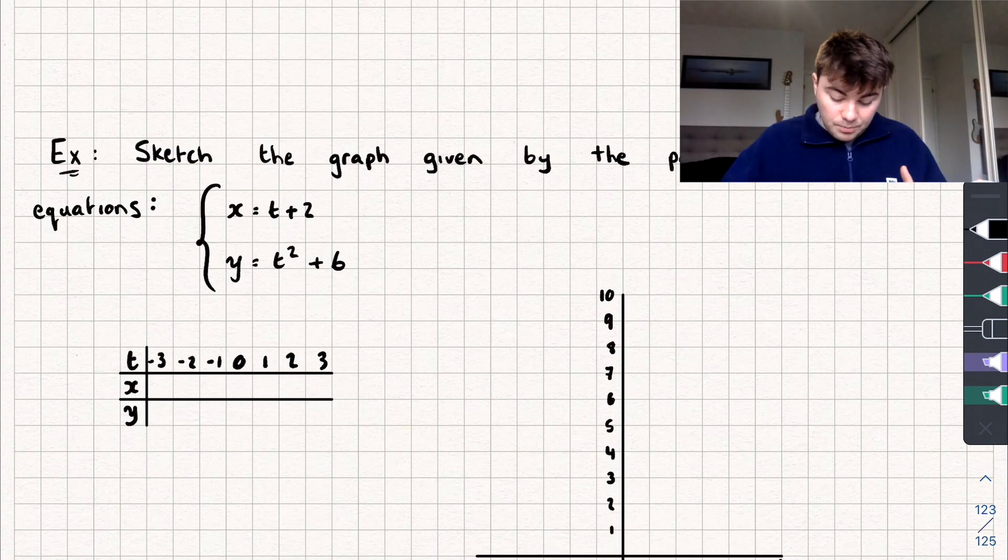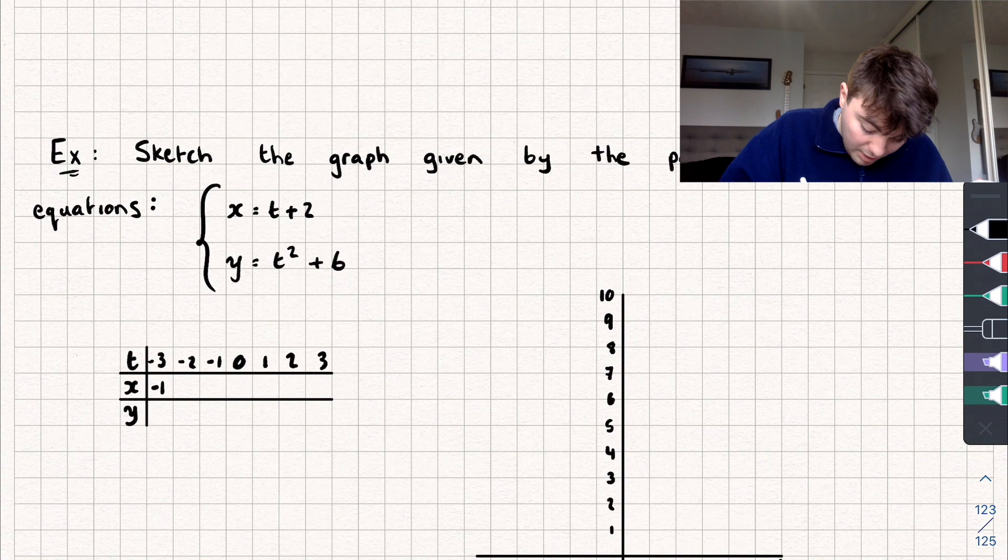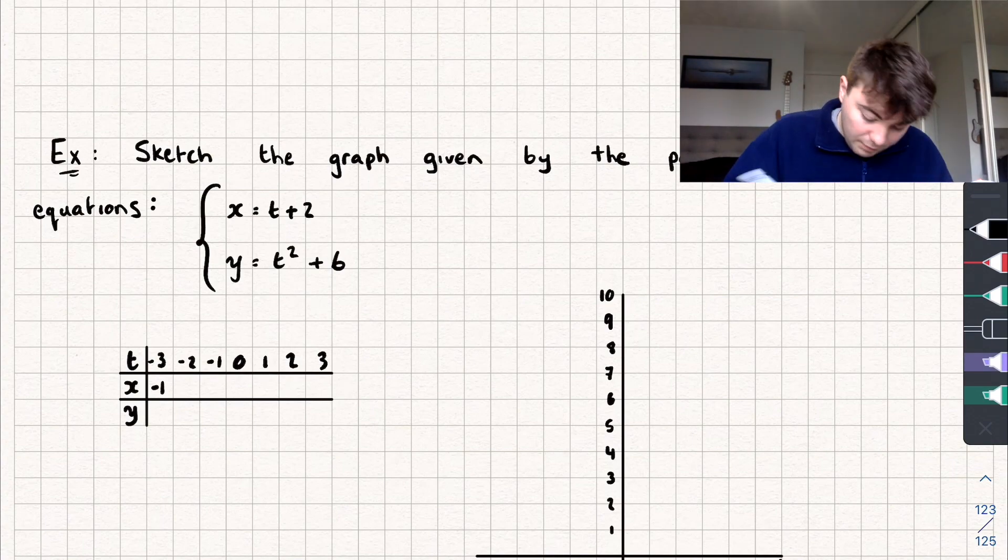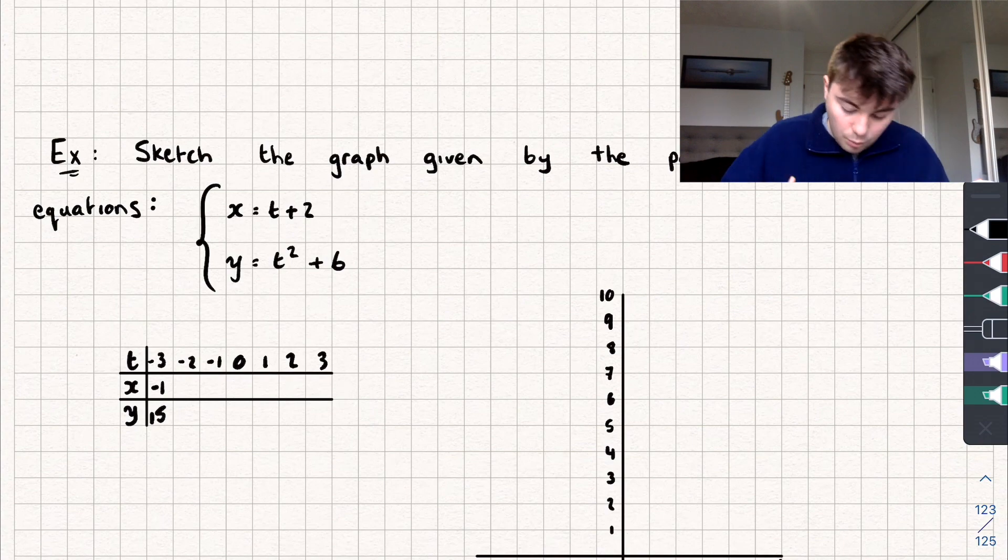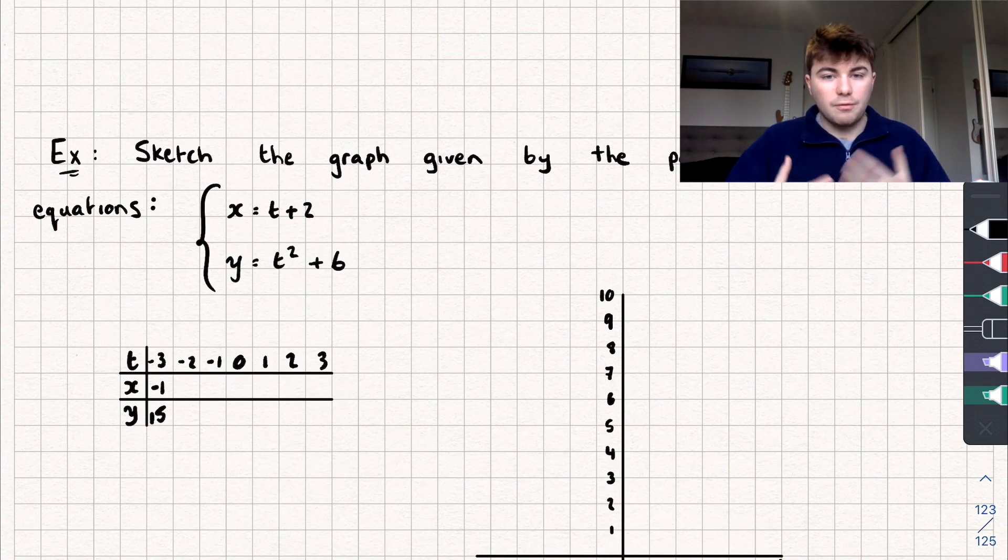For example, when t is equal to negative 3, our value of x is going to be negative 3 plus 2, so x is negative 1. And our value of y is going to be negative 3 squared, which is 9, plus 6, which gives us 15. So we've got one coordinate: when x is negative 1, y equals 15. And now I'm just going to fill out the rest of the values for this table.